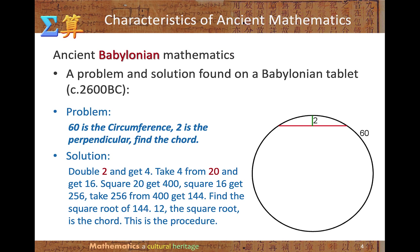We will start with some characteristics of ancient mathematics. Let's look at this problem from ancient Babylonian mathematics. The problem states: 60 is the circumference, 2 is the perpendicular. Find the chord. The solution says: double 2 and get 4; take 4 from 20 and get 16; square 20 to get 400; square 16 and get 256; take 256 from 400 to get 144; find the square root of 144, which is 12. The square root is the chord. This is the procedure.